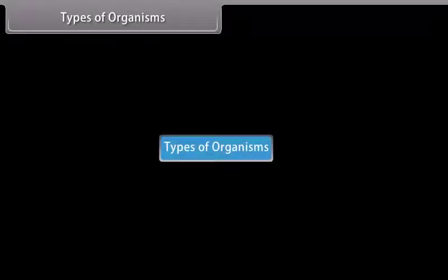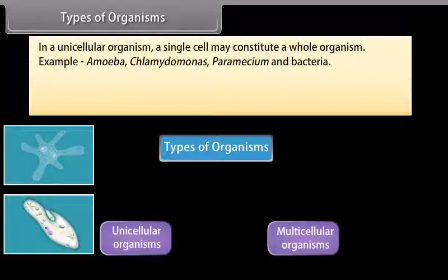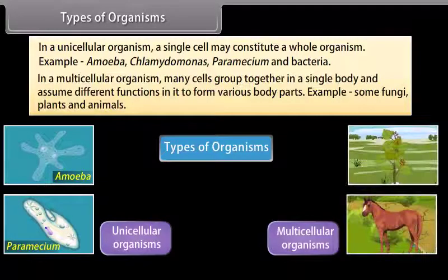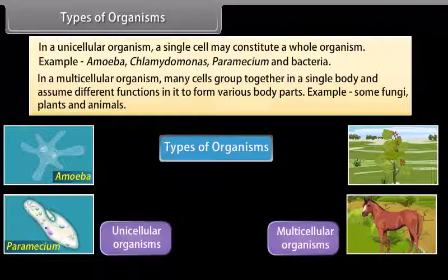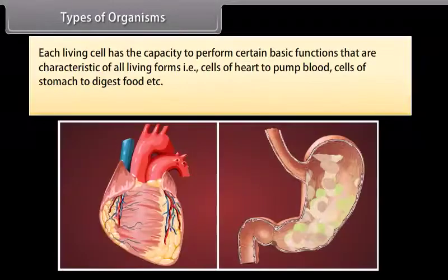Types of organisms: In unicellular organisms, a single cell may constitute a whole organism — examples include amoeba, chlamydomonas, paramecium, and bacteria. In multicellular organisms, many cells group together in a single body and assume different functions to form various body parts — examples include some fungi, plants, and animals.